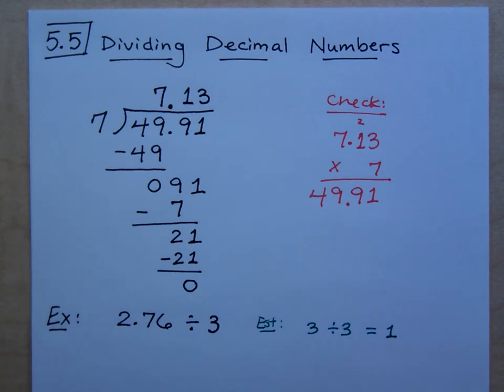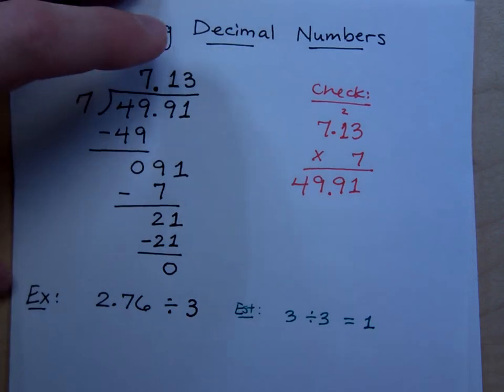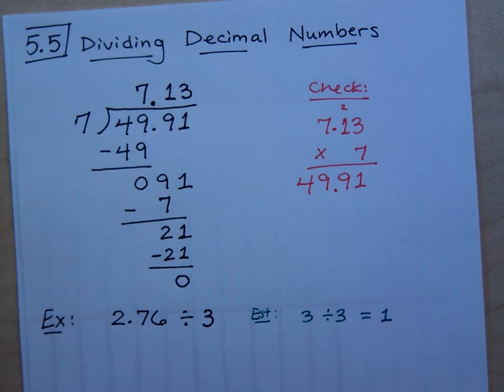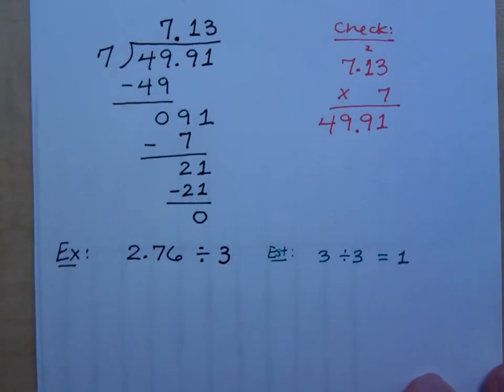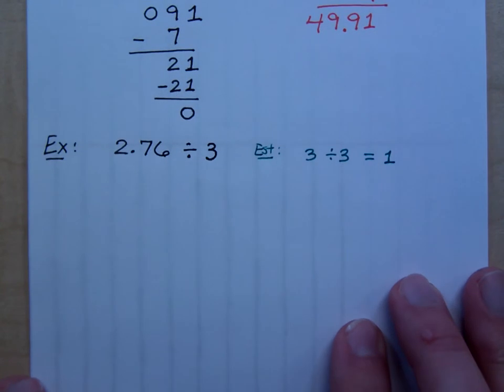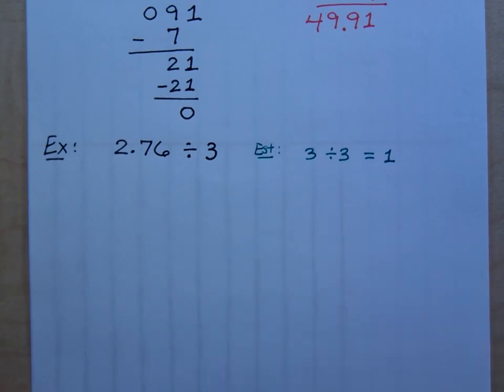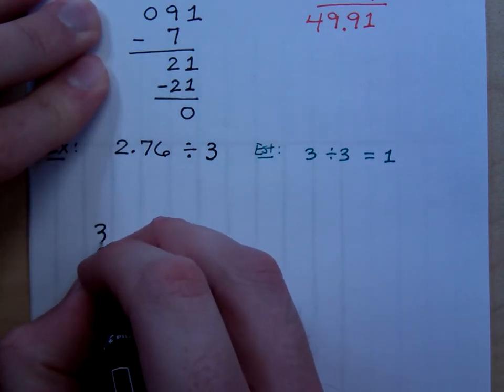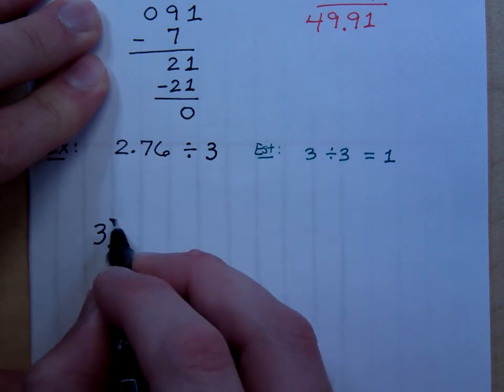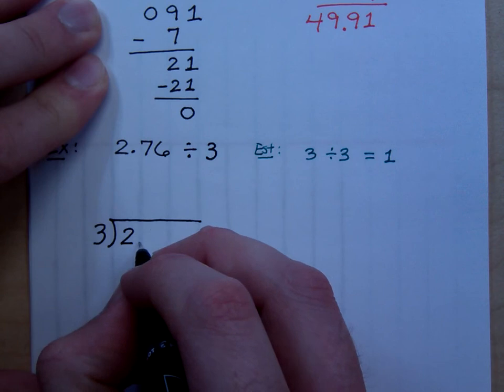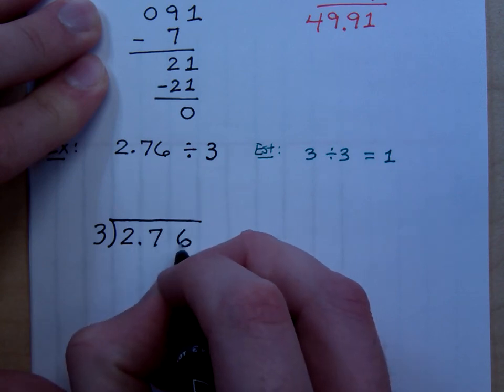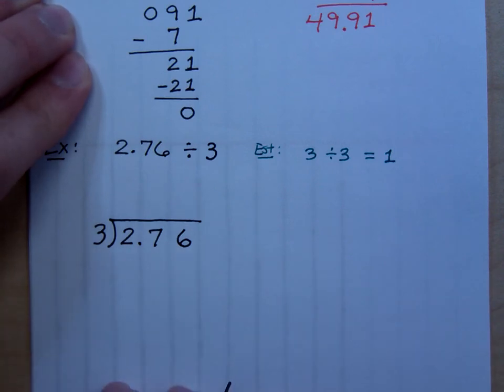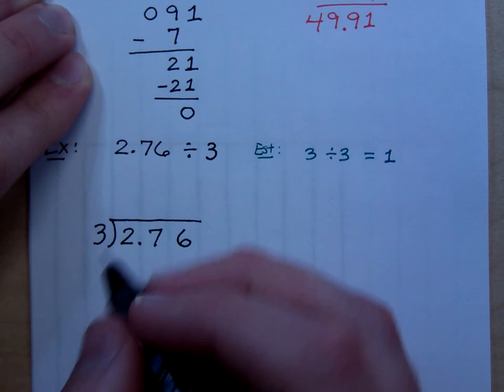Now I'm going to slip this piece of paper underneath here to give me a nice column so I can line everything up. Remember, neatness is very important. It keeps things in order and keeps you from getting things off. So 2.76 divided by 3. So let's just write this out here. So 3 divided into 2.76. Notice how I'm keeping everything lined up. Since I'm dividing by an integer, I'm just going to move my decimal point up to be right here.